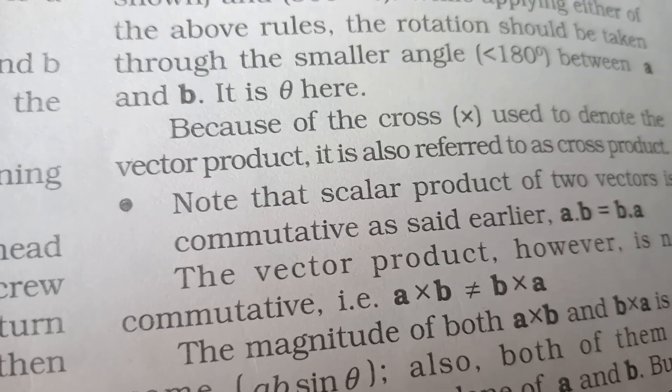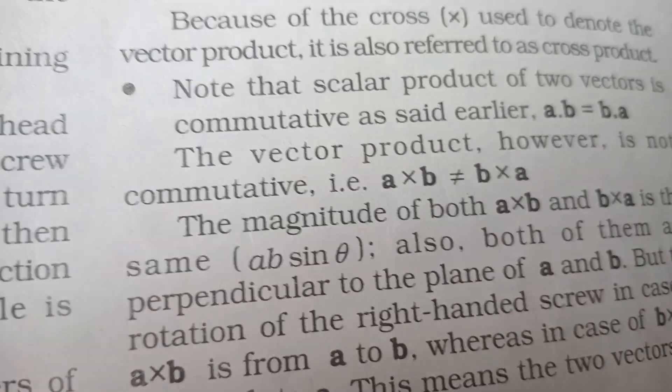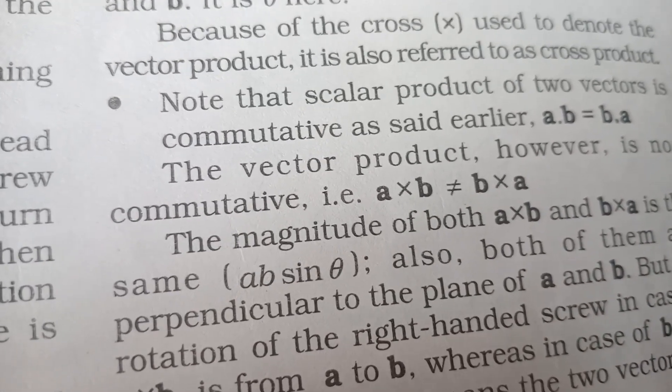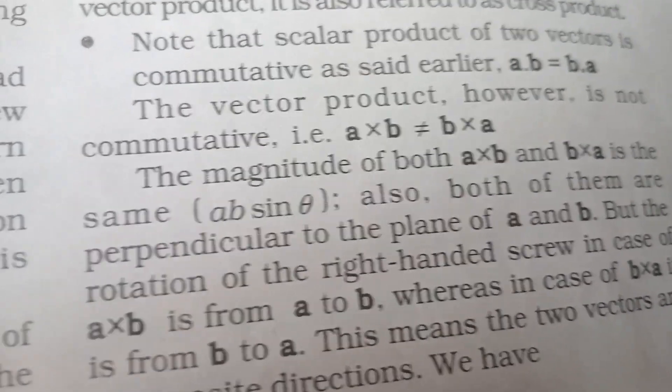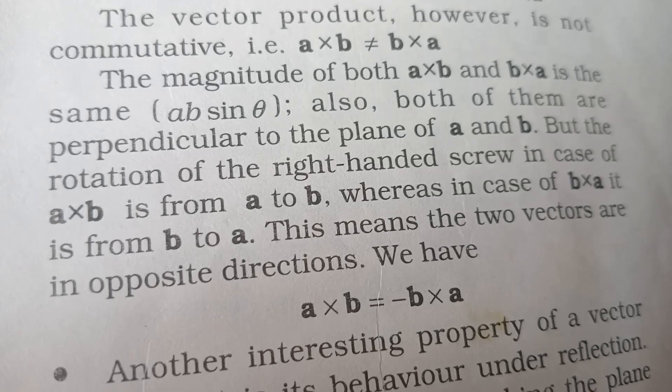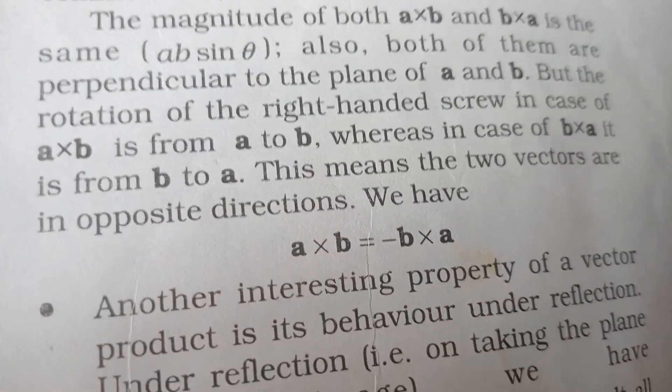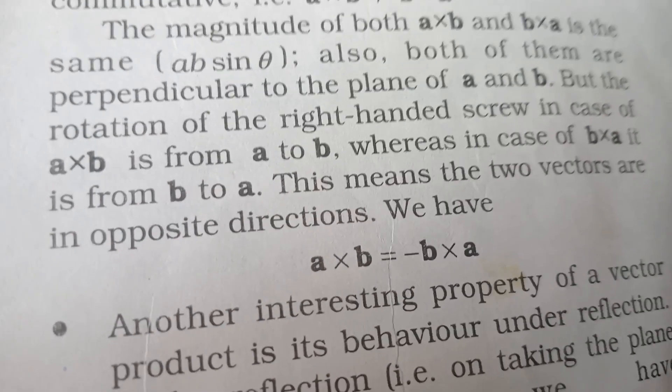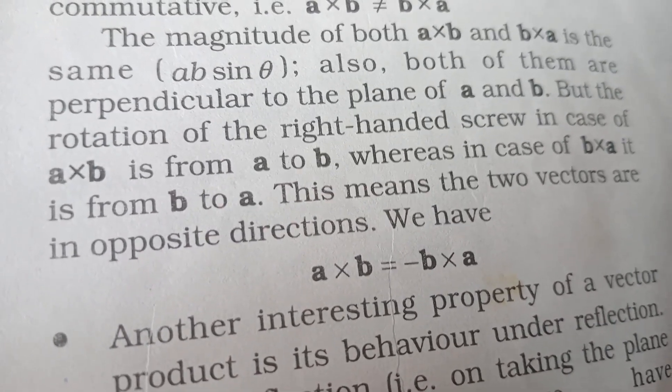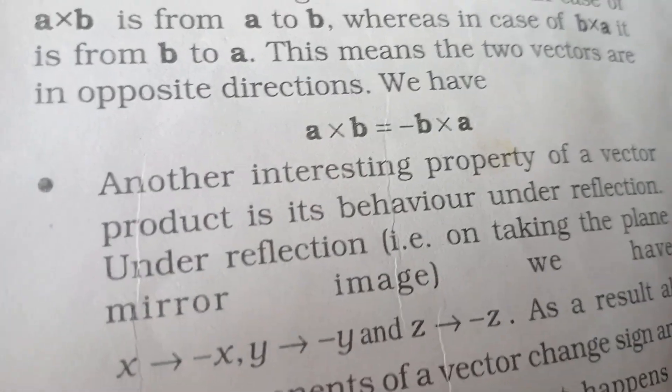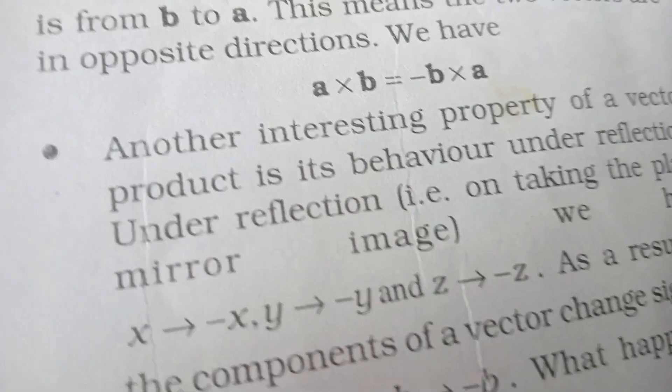Because of the cross used to denote the vector product, it is also referred to as cross product. Note that scalar product of two vectors is commutative. But vector product is not commutative; the direction changes. A cross B is not equal to B cross A. The magnitude of both A cross B and B cross A is the same, and both are perpendicular to the plane of A and B, but the rotation direction changes.